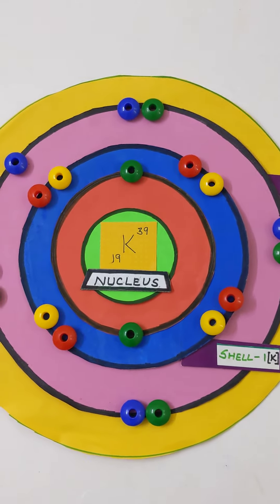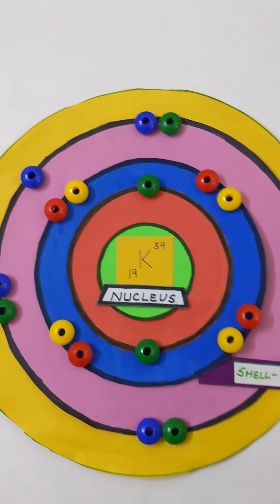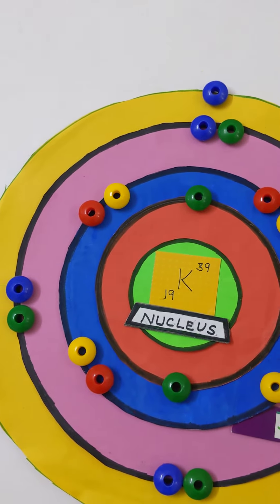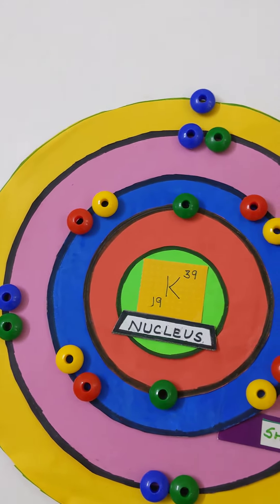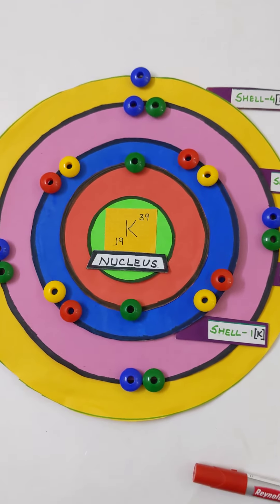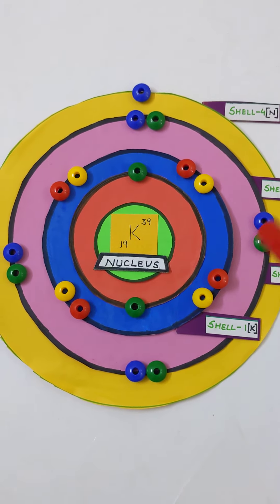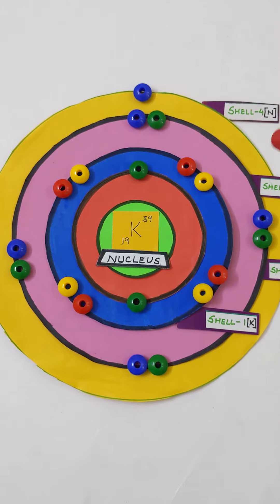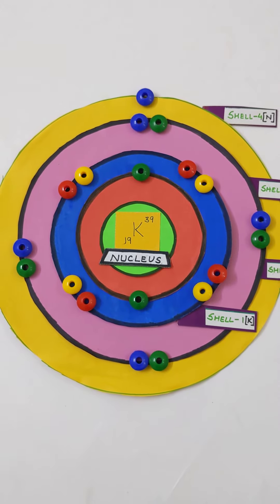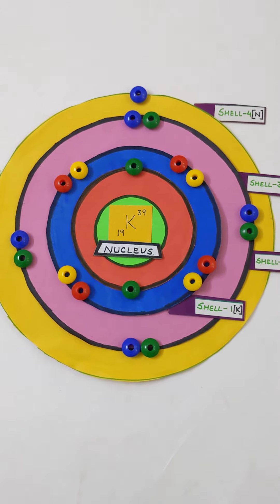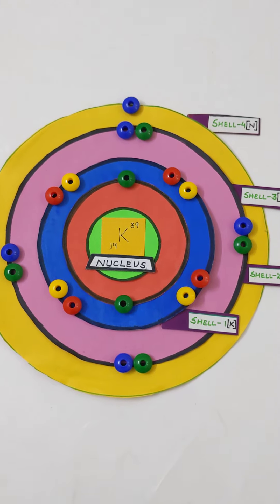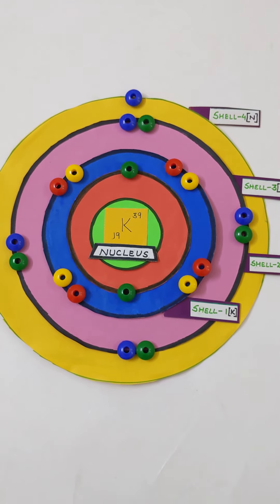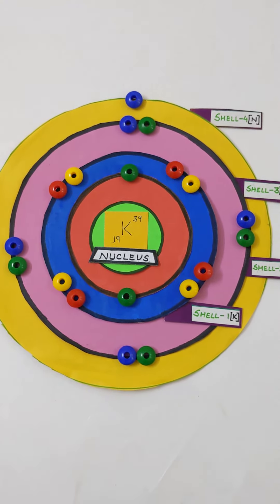The correct way is to move that ninth electron into the outermost shell. So we put two electrons in the K shell, eight electrons in the L shell, eight electrons in the M shell, and one electron in the N shell. This gives the correct electronic configuration of 2, 8, 8, 1, with four shells: K, L, M, and N.